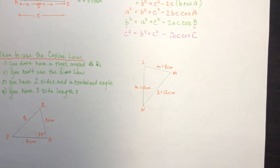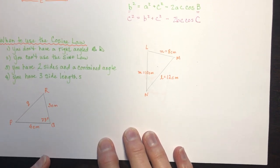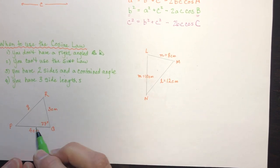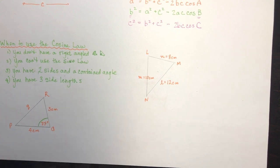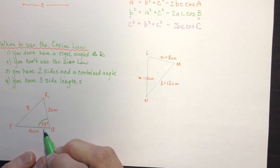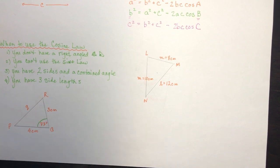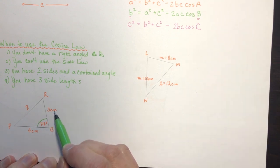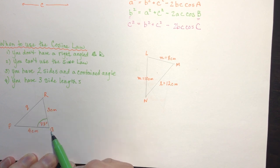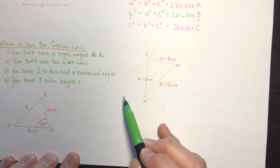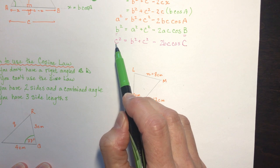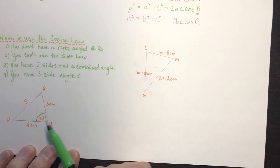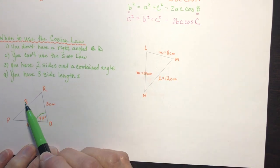Two sides and a contained angle looks like this example: you have two sides and the angle contained between them. The contained angle is in between those two side lengths. With this angle and these two sides, you can find the third side length — in this case, side q.